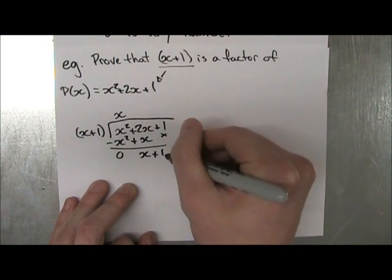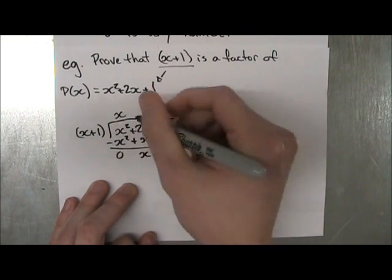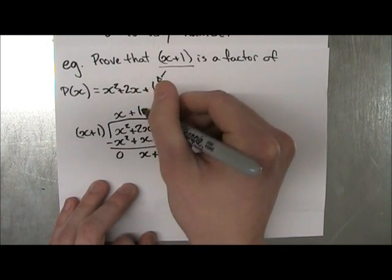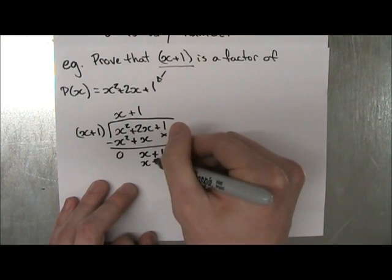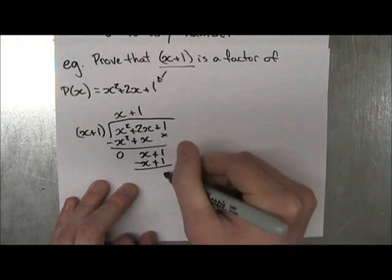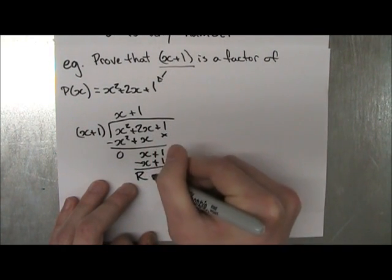Now what times x is equal to x? That's plus 1, 1 times x is x, 1 times 1 is 1, plus 1, you subtract these two, and you get 0. So your remainder is 0.